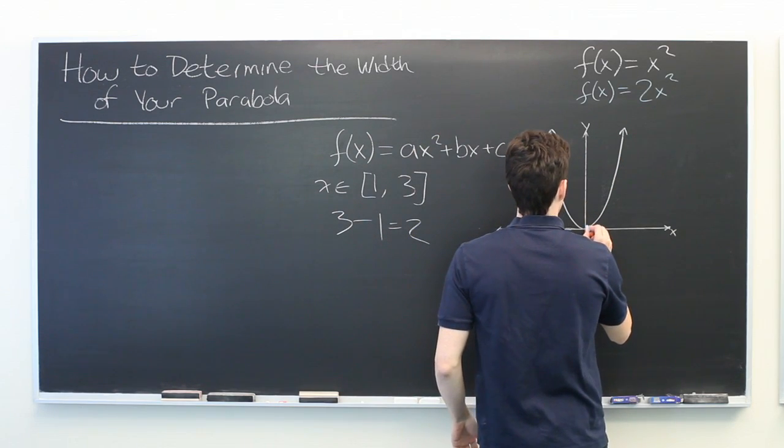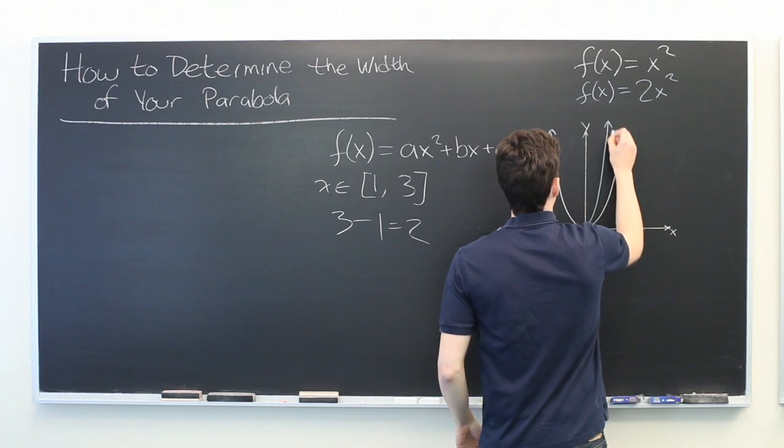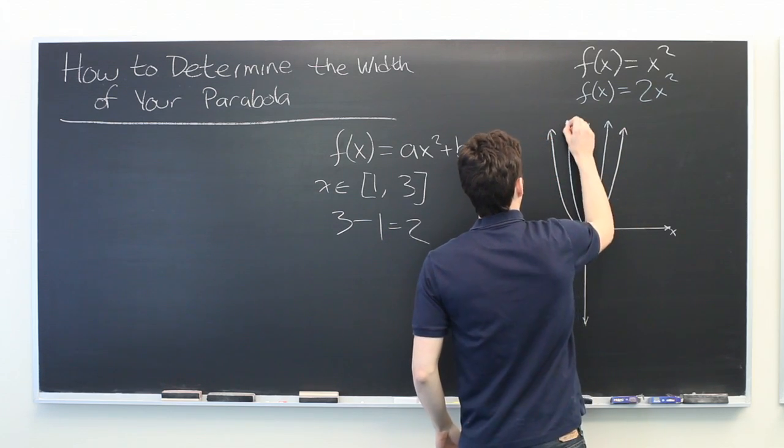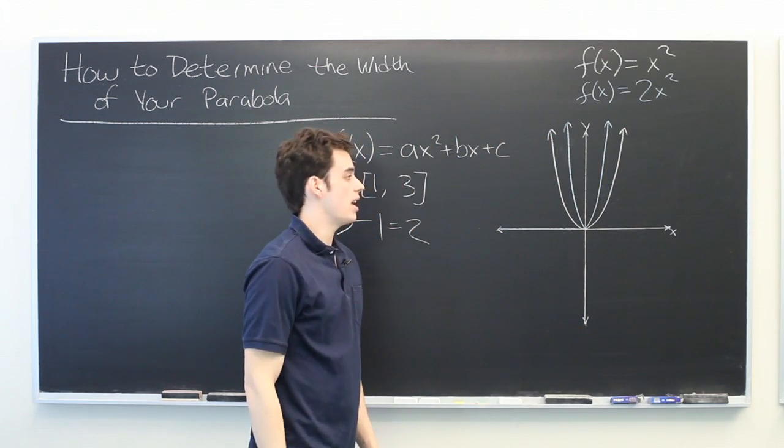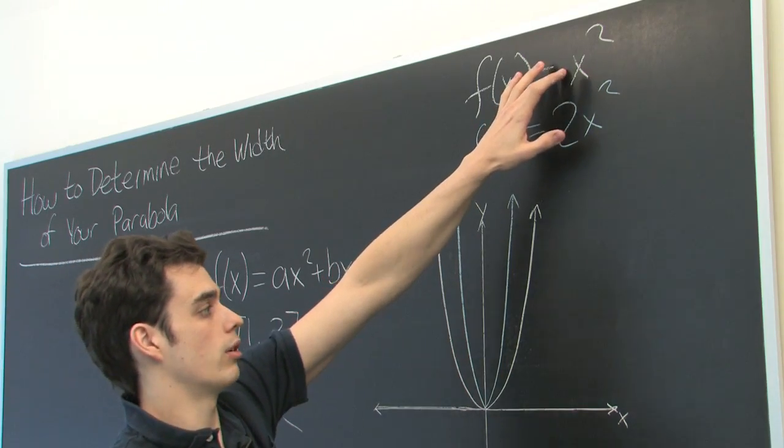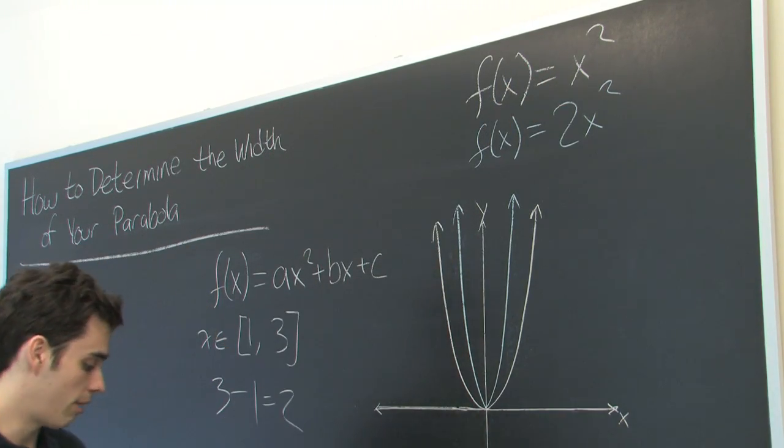It may seem counterintuitive, but that actually makes the parabola narrower. There is an inverse relationship between the leading coefficient and the apparent width of the parabola.